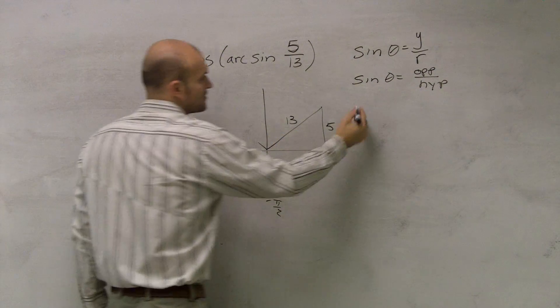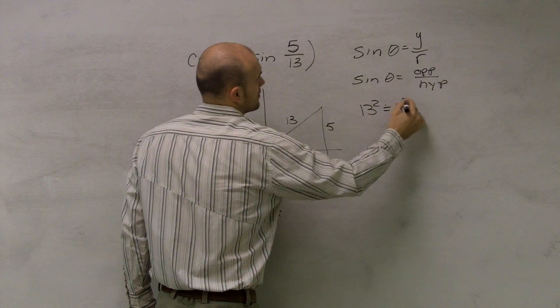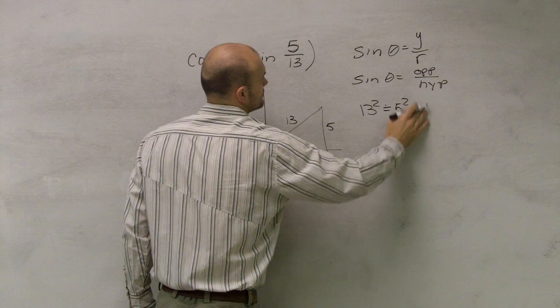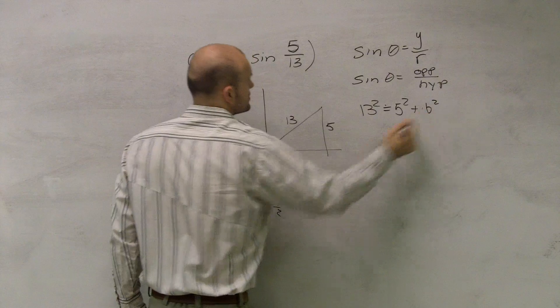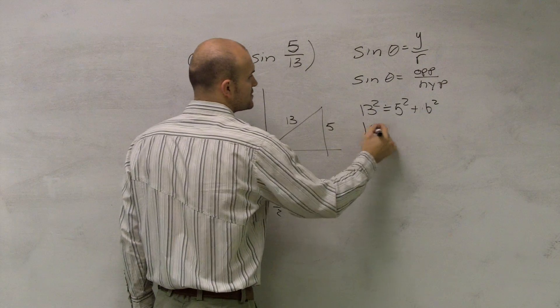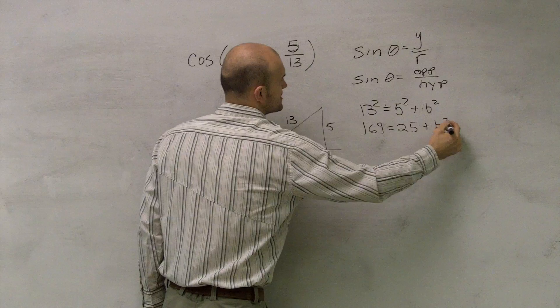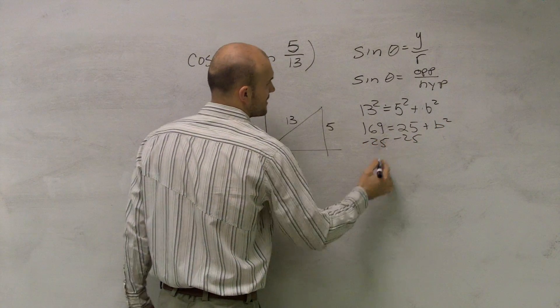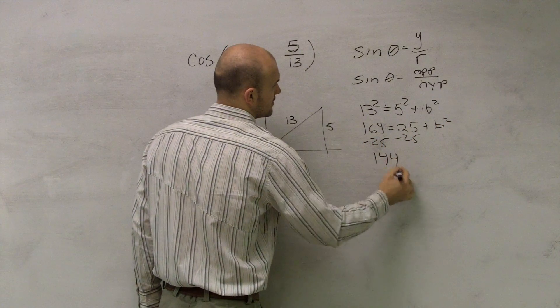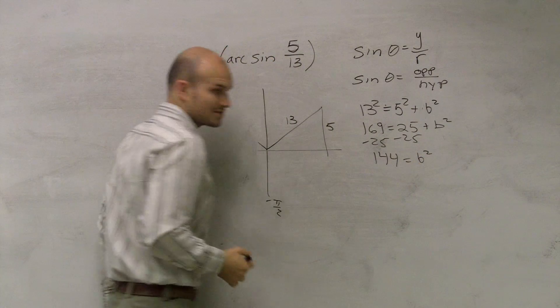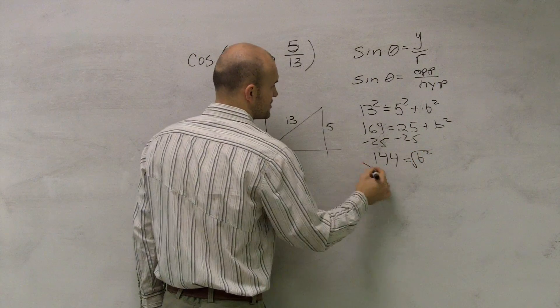And I can now use Pythagorean theorem to solve for this. So I have 13 squared, which is 169, equals 25 plus b squared. Minus 25. Yeah, I know it's going to be 12, but I'm just going to show the work to make sure everybody understands.